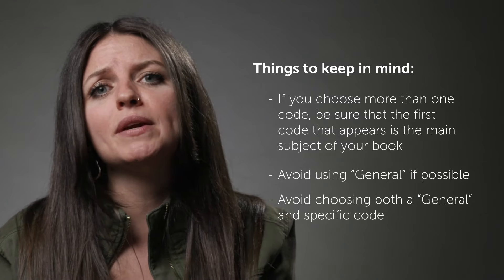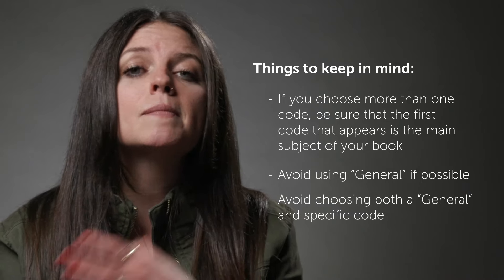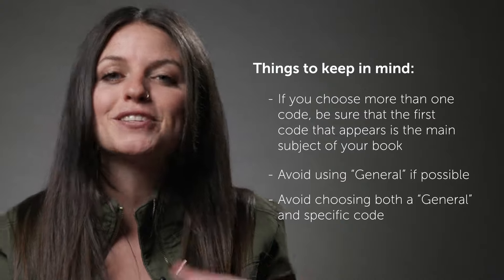Avoid using general if possible — you want to be as specific as you can when choosing your BISAC codes. It's also important to avoid using a general and specific code together, as BISG recommends against that. An example would be using Biography and Autobiography slash Culinary and Biography and Autobiography slash General for the same title. Remember, it might be tempting to cast a wide net or think that your book defies genre, but if you express that while picking out your BISAC categories, you'll be doing yourself and your book a huge disservice. Bestsellers don't market to a broad audience — they look for their niche group of true fans who are going to read their book and rave about it to others.